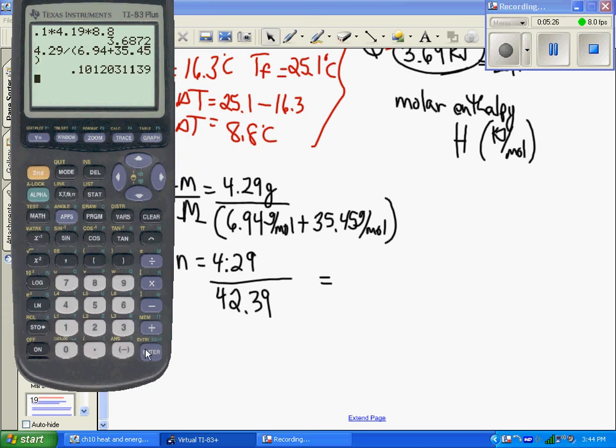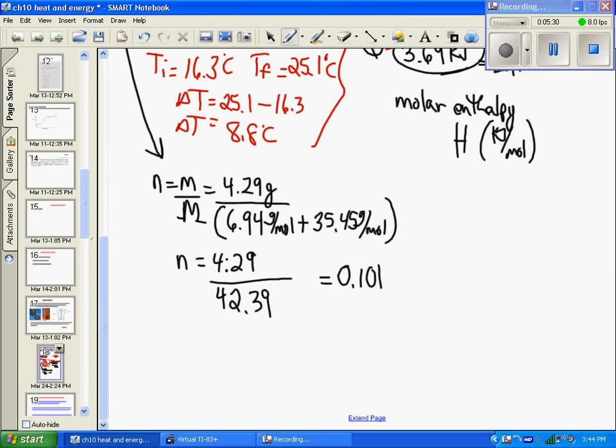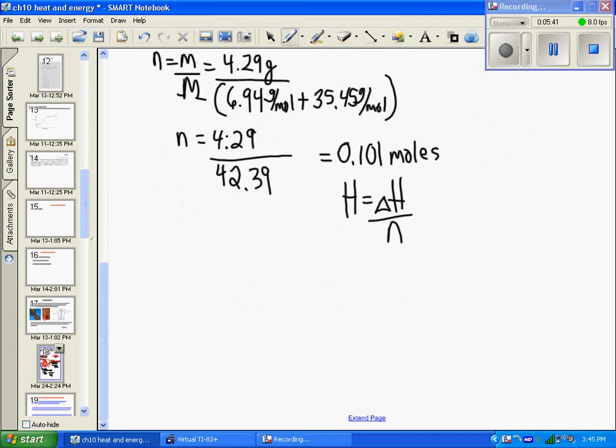We're almost done. H is ΔH divided by n, in kilojoules per mole. ΔH is 3.69 kilojoules. We divide by 0.101 moles.